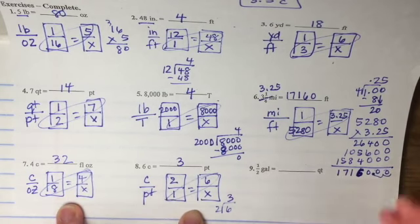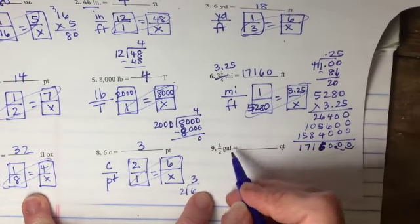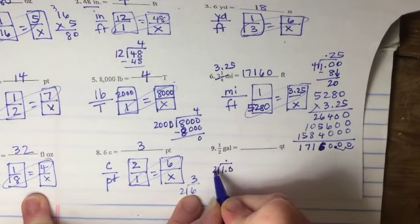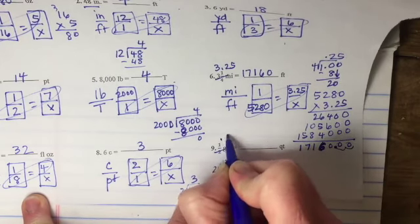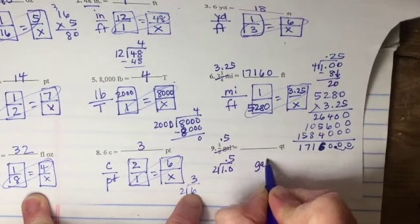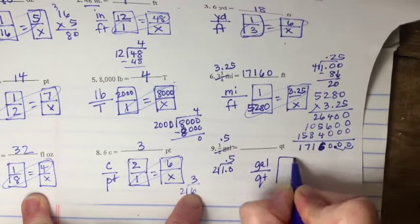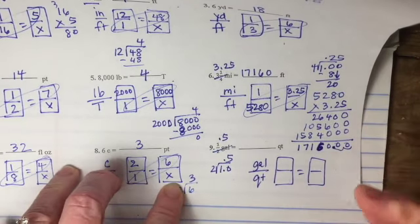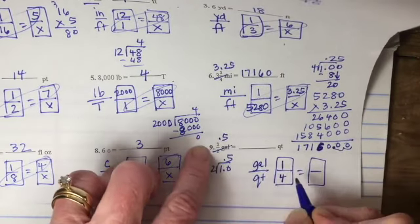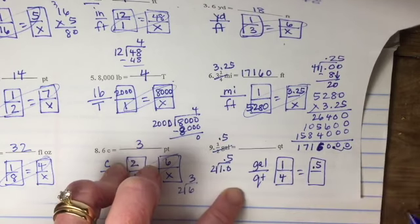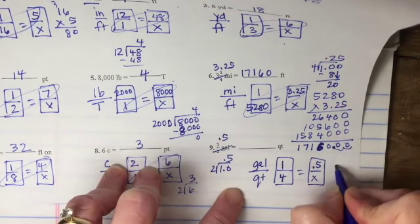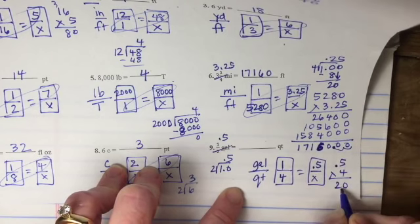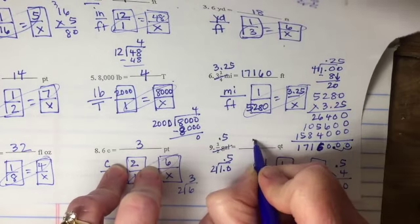And the last one, one half gallon. Again, because it's a fraction, I want to change that to a decimal first. So if I divide two into one, I can't really do that. Change that to 0.5. So this is really 0.5 now. I'm still going to use gallons and quarts. And if I look at the information I've been given, it says that one gallon is four quarts. And I'm trying to figure out what half a gallon is. So if I multiply 0.5 times four, I get 20. But I have a decimal here. So I need to have one decimal here. So this is really two quarts.